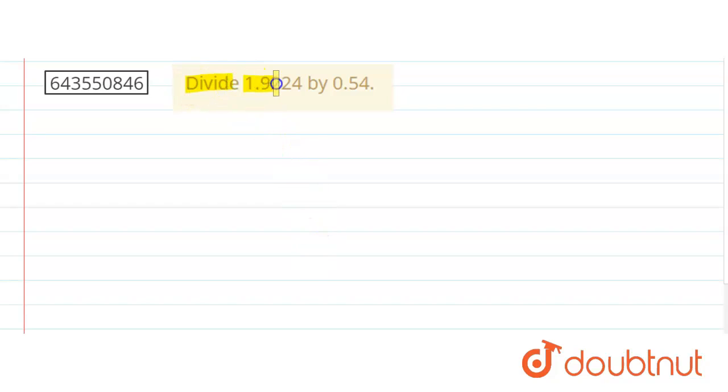divide 1.9224 by 0.54. Okay, so just take this division. This is a simple problem. Consider 1.9224 divided by 0.54. We'll try to shift the decimals.